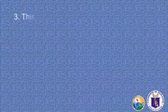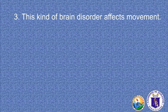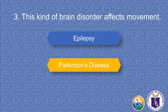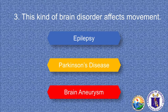Number three: this kind of brain disorder affects movement. Is it epilepsy, Parkinson's disease, or brain aneurysm? If you answered Parkinson's disease, you got it right.